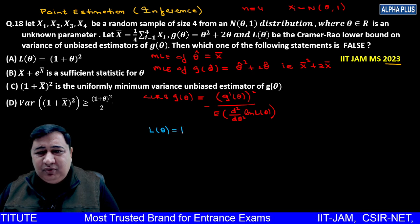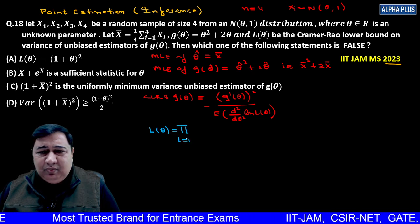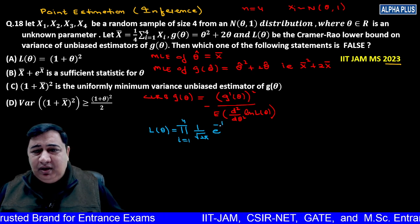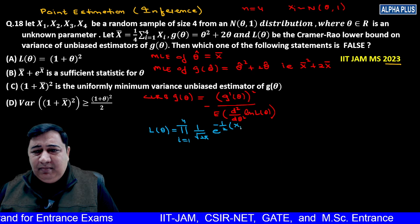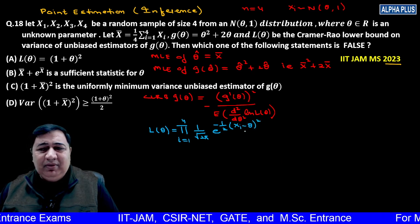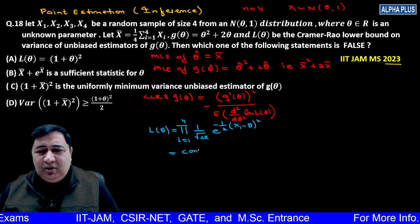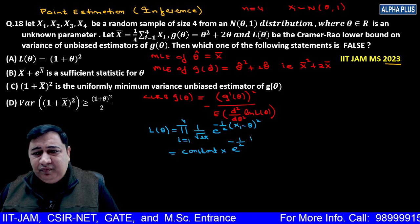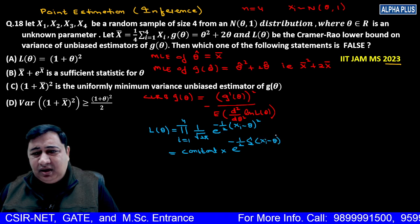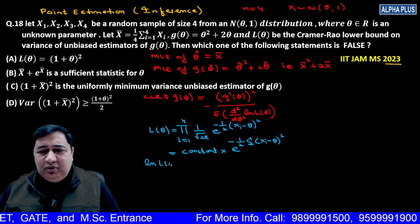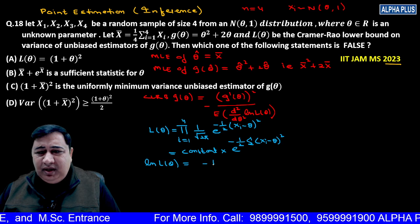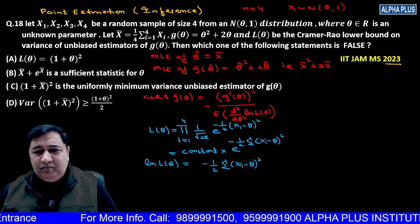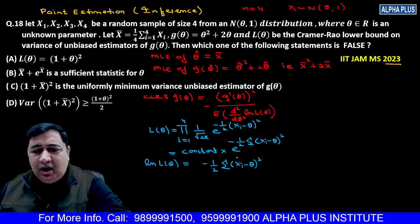Let's find the likelihood function of theta. The likelihood function is constant times e to the power minus one by two summation (Xi minus theta) squared. Since sigma squared equals one, theta is the parameter. Now we need to find log likelihood. Log of constant is removed, log e becomes one, so we get minus half summation (Xi minus theta) squared.